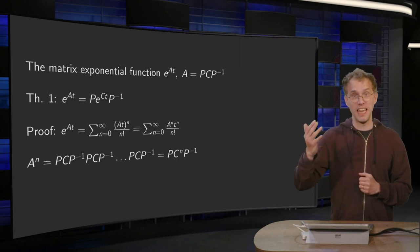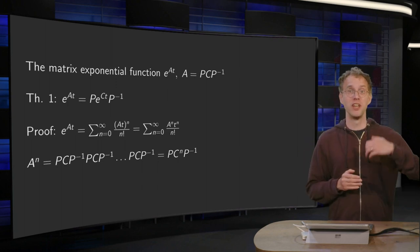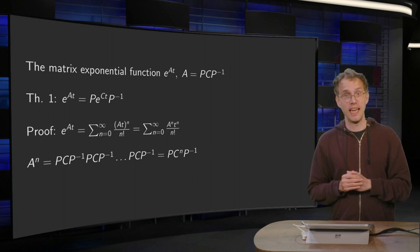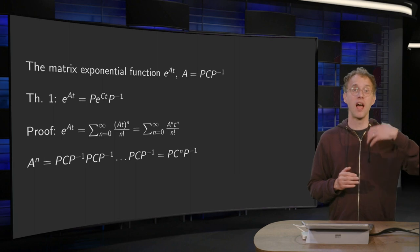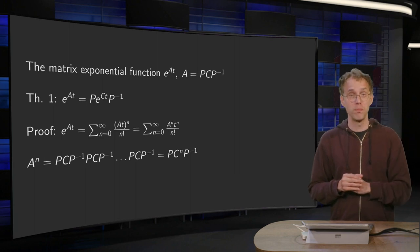Such a matrix A is similar to a C matrix, which allows us to write e to the power at into e to the power ct, and we already know how to compute e to the power ct.